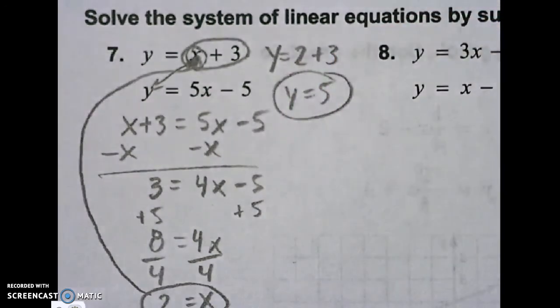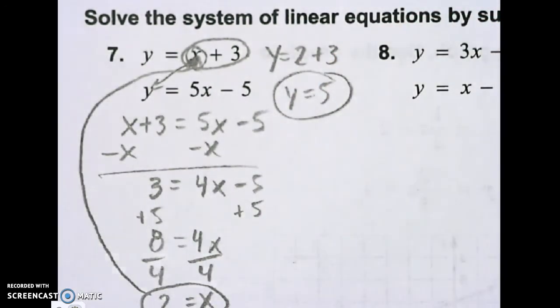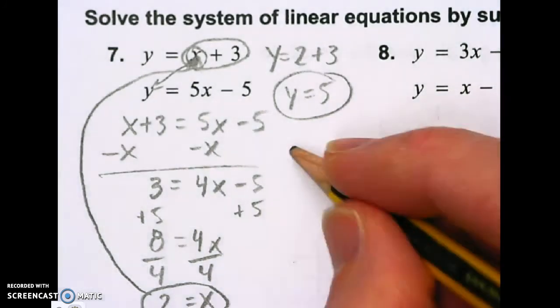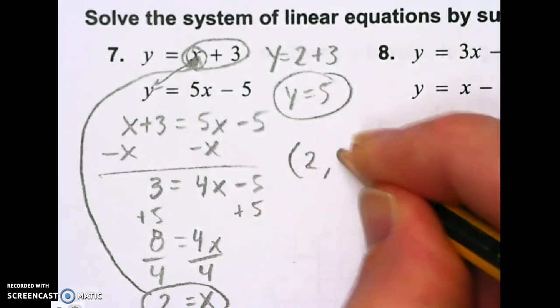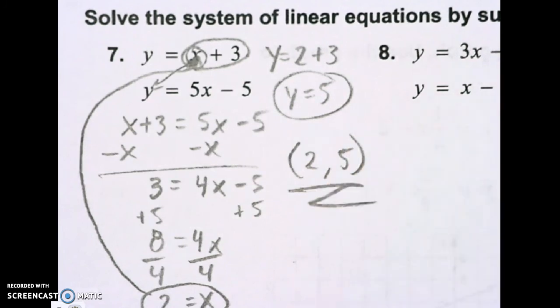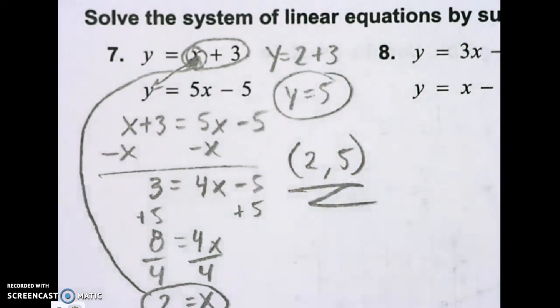Almost done. I'm going to write my coordinate pair. 2 comma 5. Over and out.